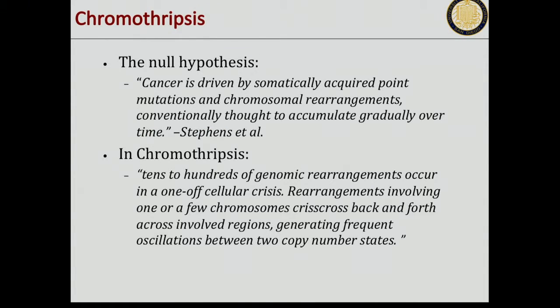Let's talk about chromothripsis. This model actually turns out to be more interesting in a negative fashion, because the hypothesis is truly extraordinary. It says that tens to hundreds of genomic rearrangements happen in a one-off cellular crisis. It shatters and comes back together in a single event.